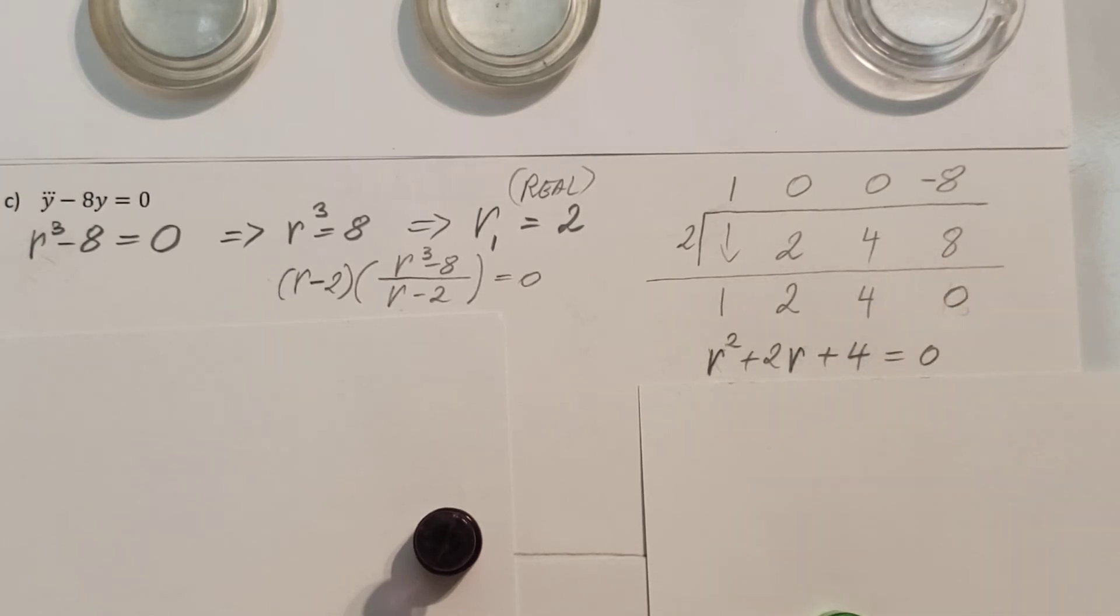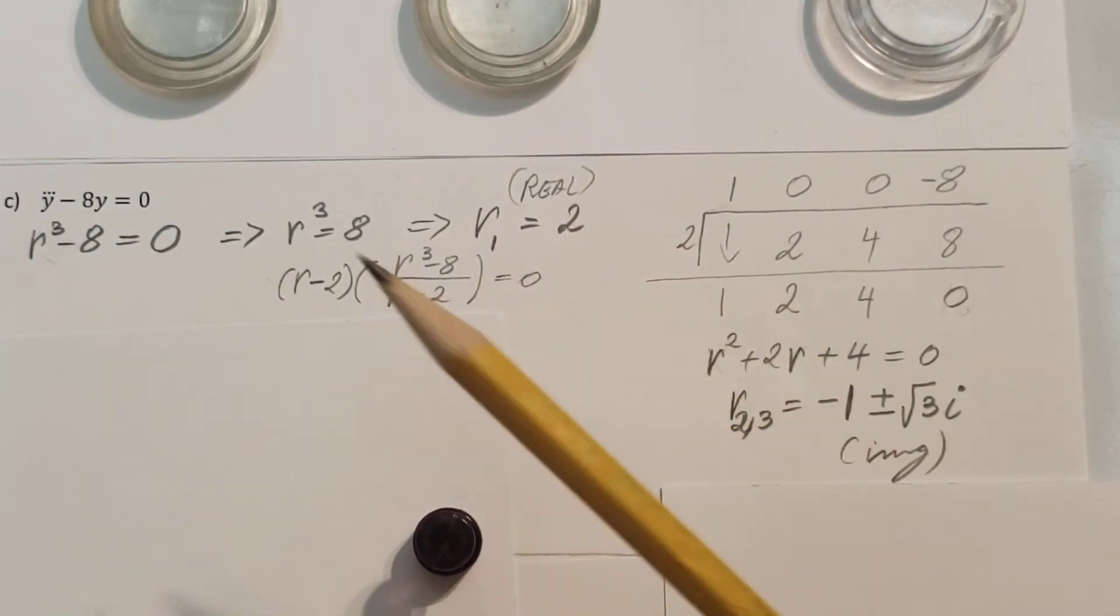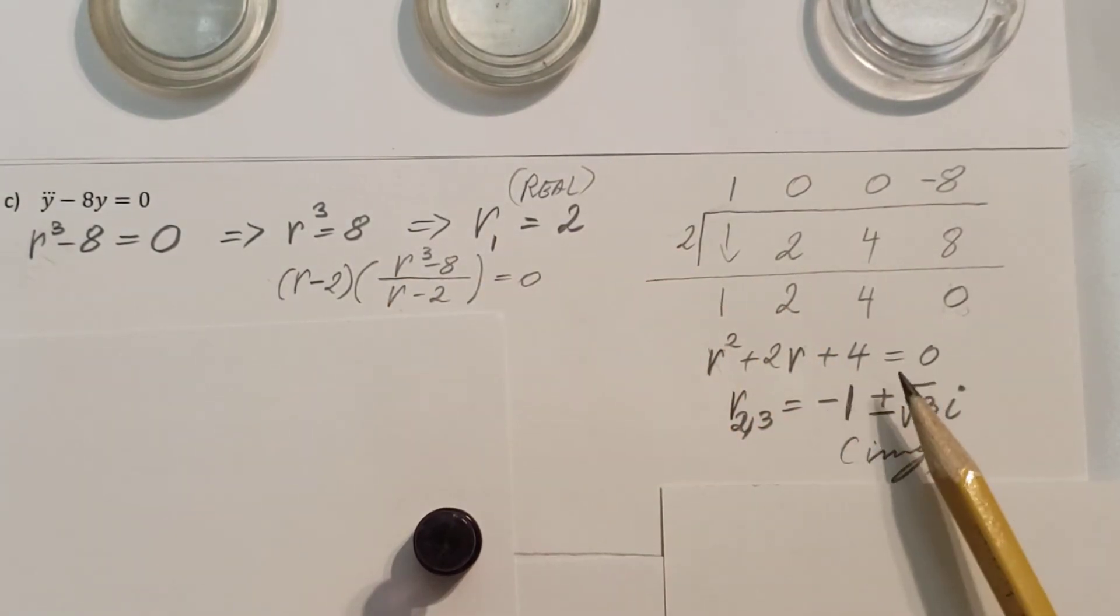Now we can solve this pretty easily and we will find our two roots that were hiding, and it is negative 1 plus minus square root 3i, so complex numbers.